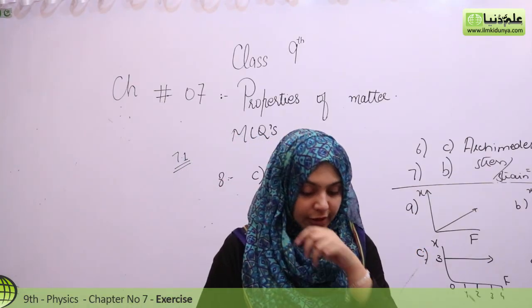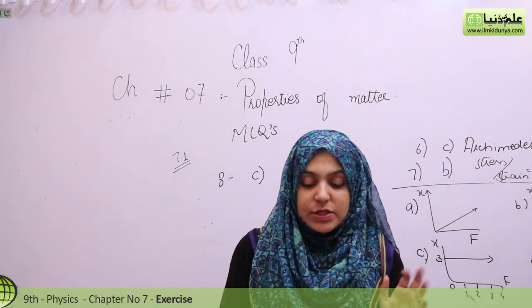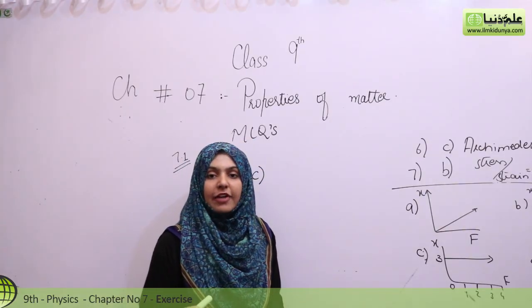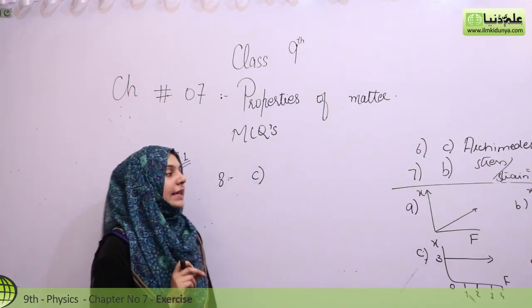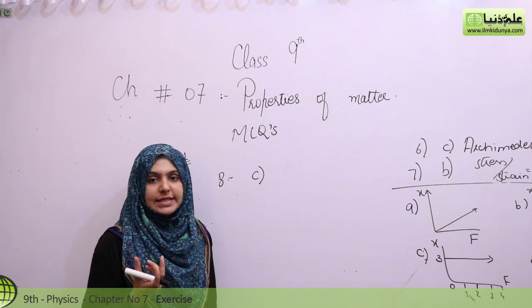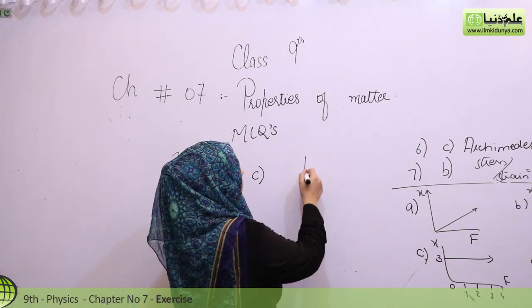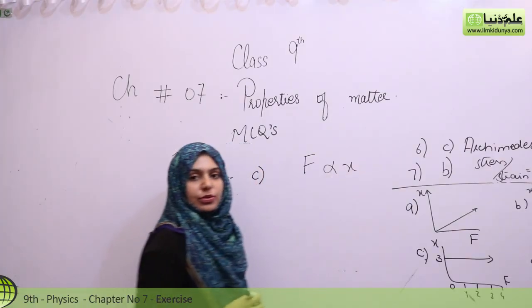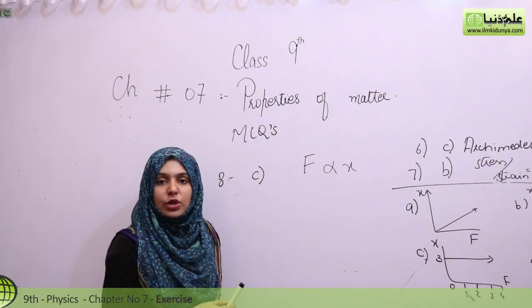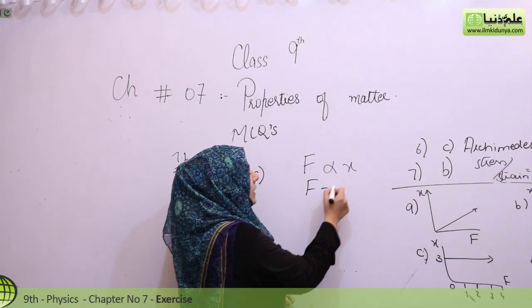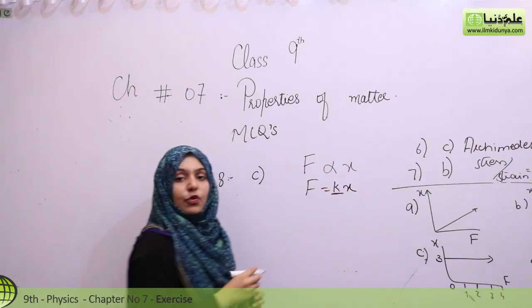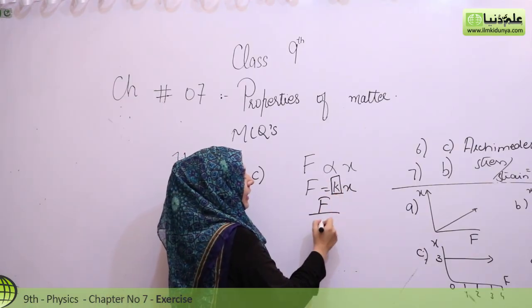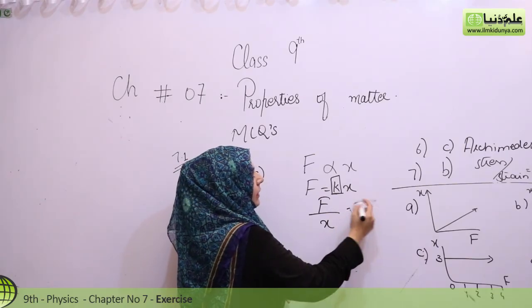Number 9: Which graph gives the smallest value of the spring constant? The spring constant K means force divided by extension equals K. If we need K to be small, extension X must be large since they are inversely proportional. We need to find which graph has the largest extension value.